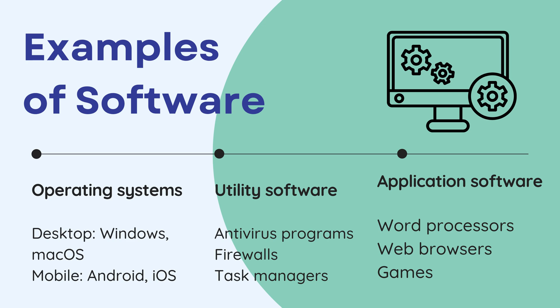Mobile operating systems like Android and iOS are also system software. Utility software includes antivirus programs, firewalls, and task managers. Application software includes programs like word processors — for example, MS Word — games, or web browsers that perform specific tasks.